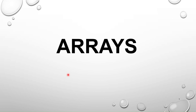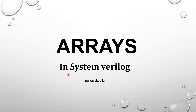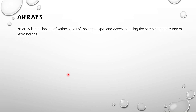In this session I am going to discuss about SystemVerilog arrays. An array is a collection of variables all of the same type — it is a group of elements storing homogeneous type variables. Array elements can be accessed using the name of that array with one or more indices.